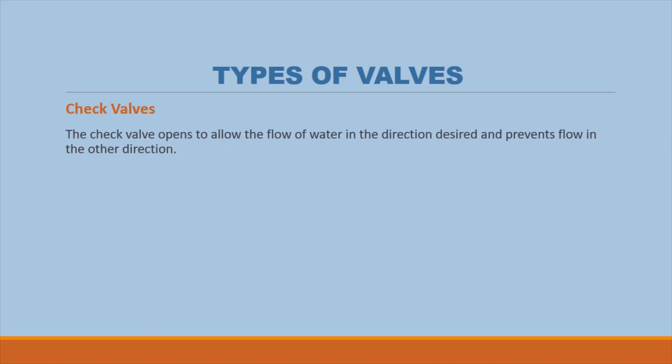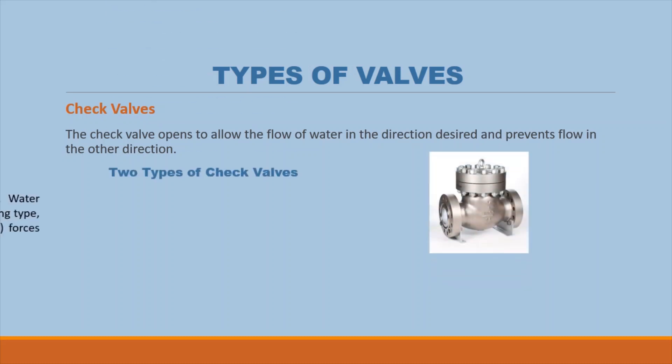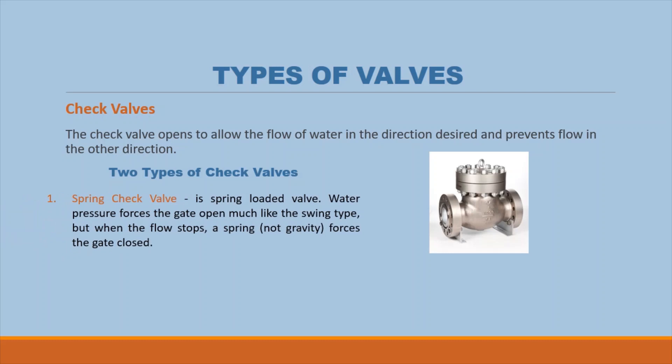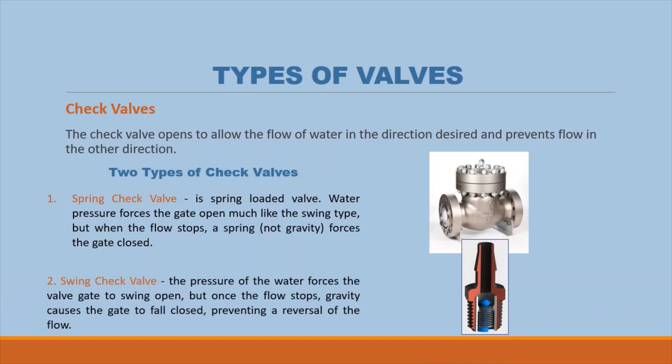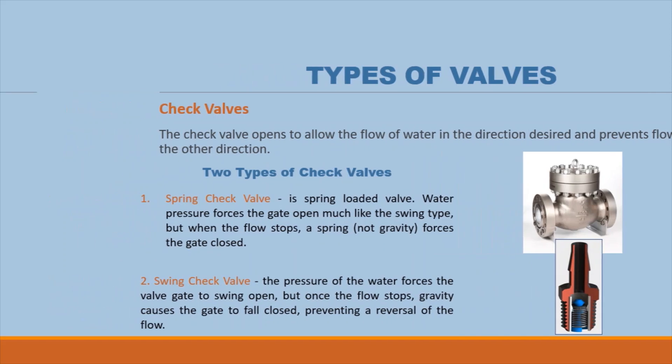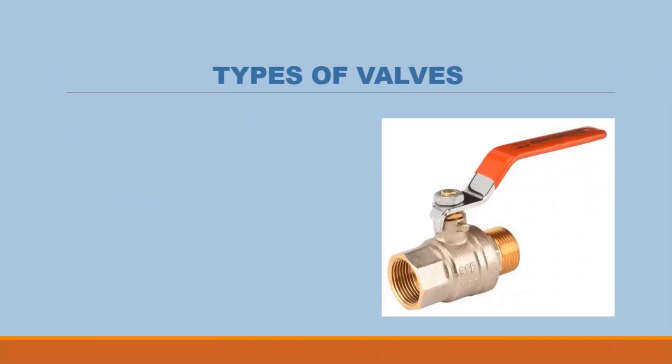Check valves open to allow the flow of water in the desired direction and prevent flow in the other direction. There are two types: the spring check valve is spring-loaded — water pressure forces the gate open, but when the flow stops, a spring (not gravity) forces the gate closed. The swing check valve: water pressure forces the valve gate to swing open, but once the flow stops, gravity causes the gate to fall closed, preventing a reversal of flow.